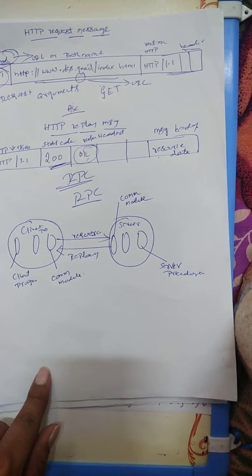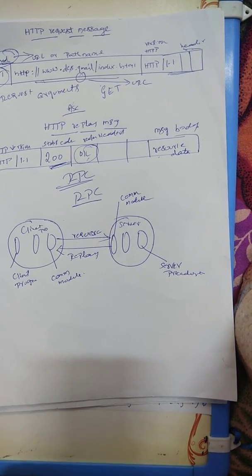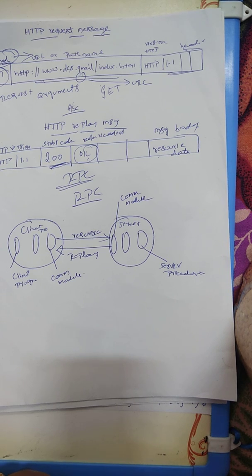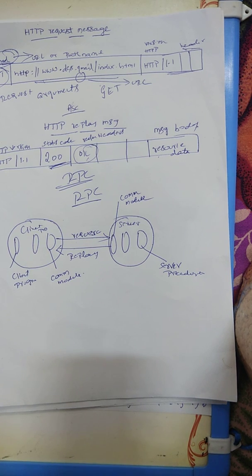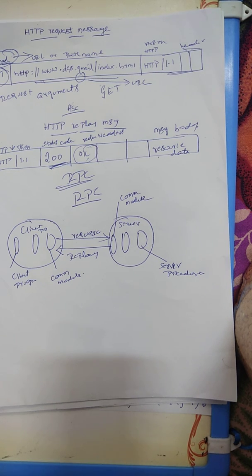Before starting RPC, there are three important issues in remote procedure call. The first issue is the style of programming promoted by RPC — programming with an interface. The second issue is the call semantics associated with RPC. The third and final issue is the key issue of transparency and how it relates to the remote procedure call. These are the three issues in RPC.